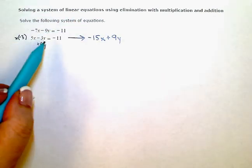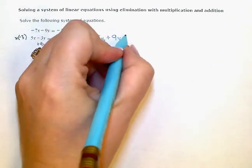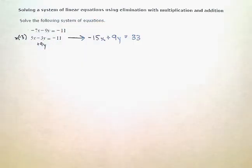And negative 3 times negative 11 is going to give me positive 33 on the right side of the equals.